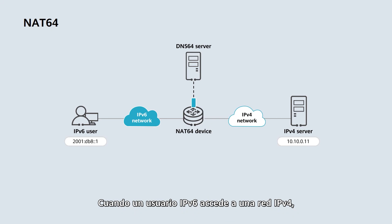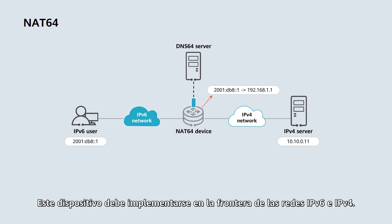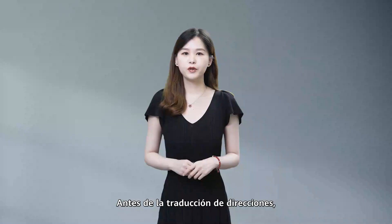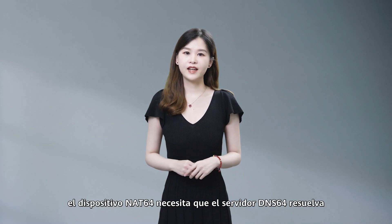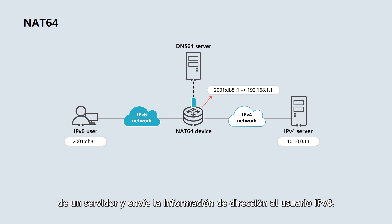When an IPv6 user accesses an IPv4 network, a NAT64 device needs to translate the user's IPv6 address into an IPv4 address. This device needs to be deployed at the border of the IPv6 and IPv4 networks. Before address translation, the NAT64 device needs the DNS64 server to resolve the domain name entered by the IPv6 user into a server's IPv4 address, and to send the address information to the IPv6 user.